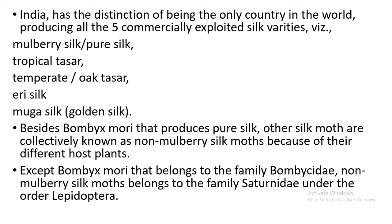In India, there are five types of silk commercially produced: Mulberry silk (also called pure silk), Tropical Tassar, Temperate or Oak Tassar, Eri silk, and Muga silk (also called golden silk). Bombyx mori produces mulberry silk, while the other silk moths are called non-mulberry silk moths because they do not depend on mulberry leaves. Except Bombyx mori, which belongs to the family Bombycidae, the other silk moths belong to the family Saturniidae under the order Lepidoptera.